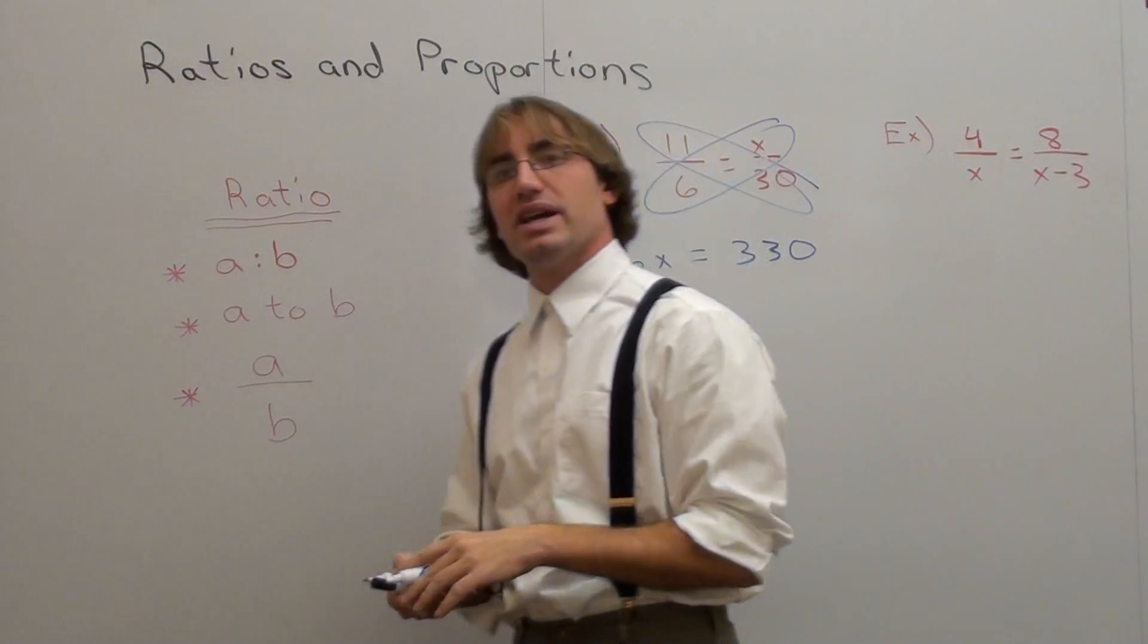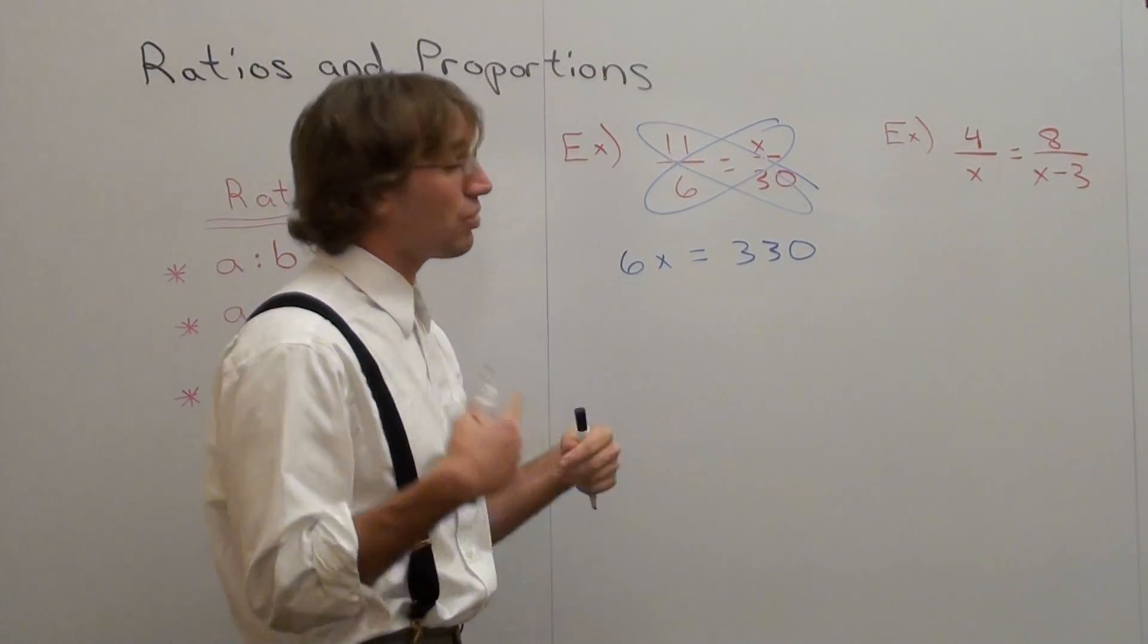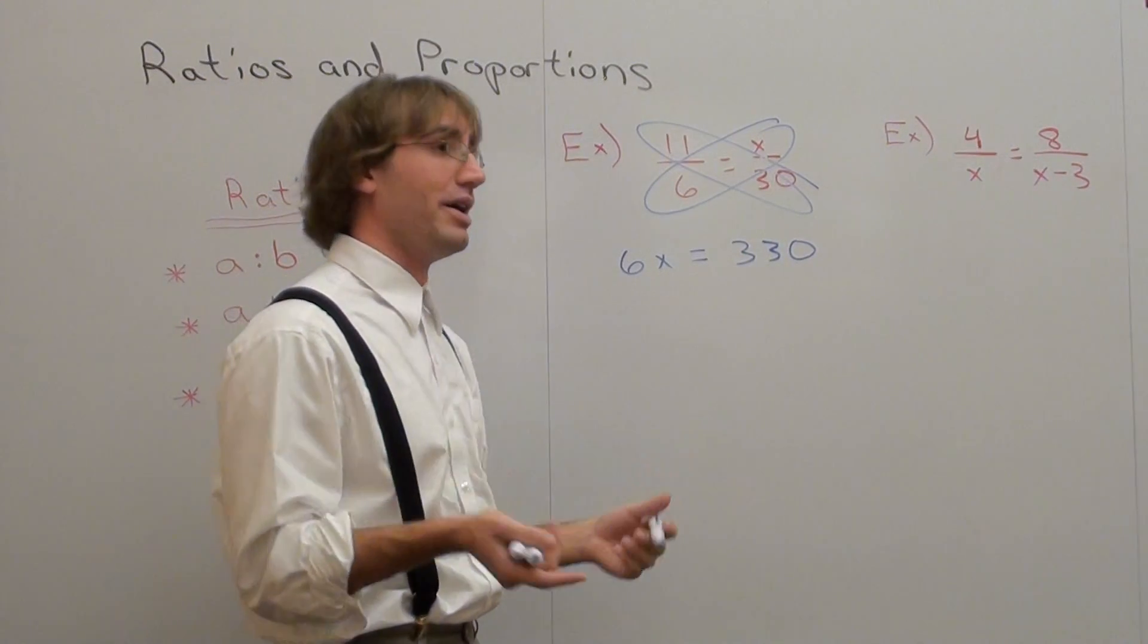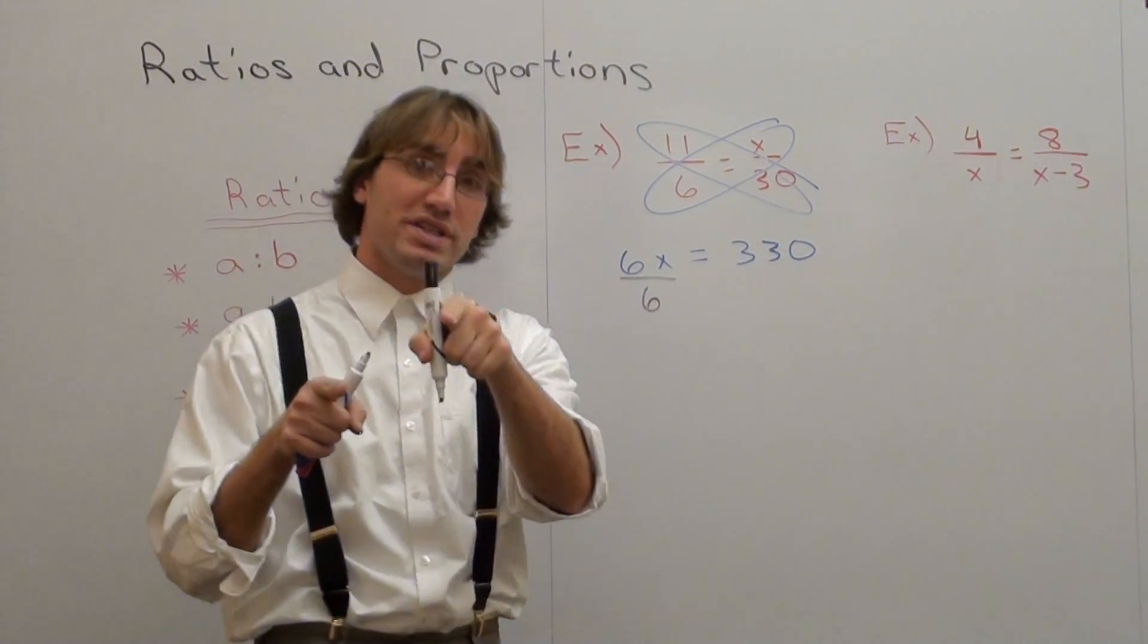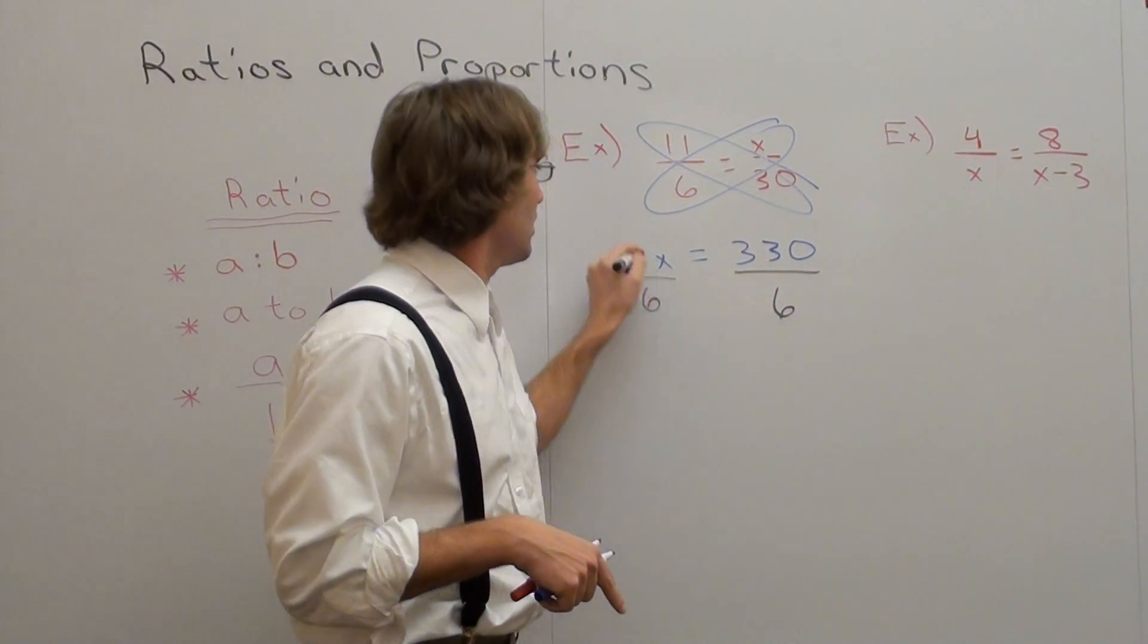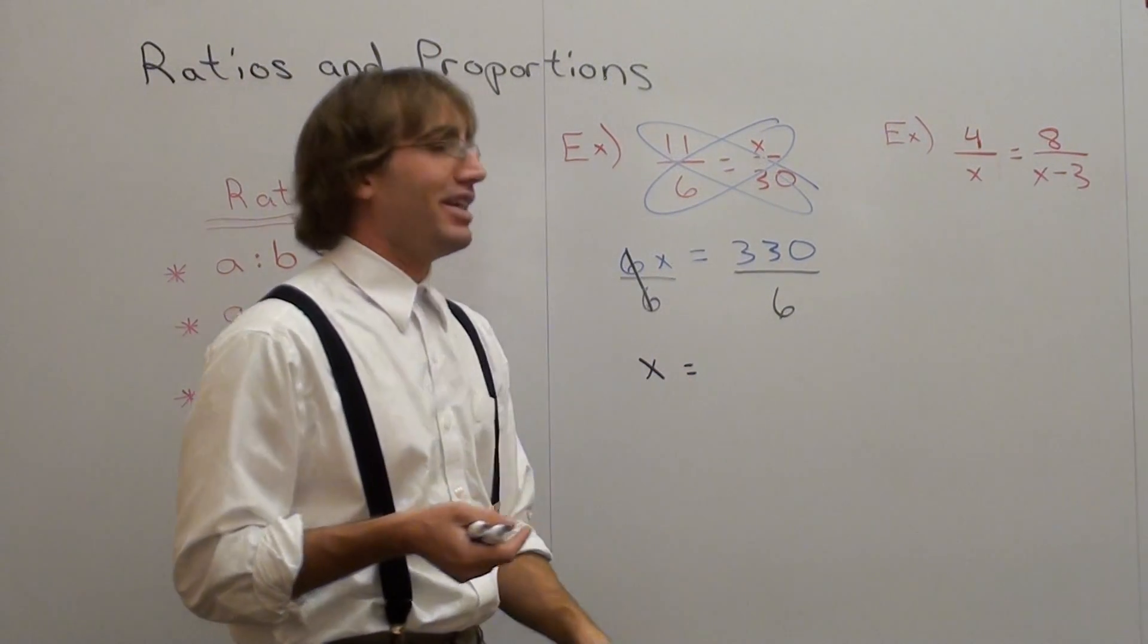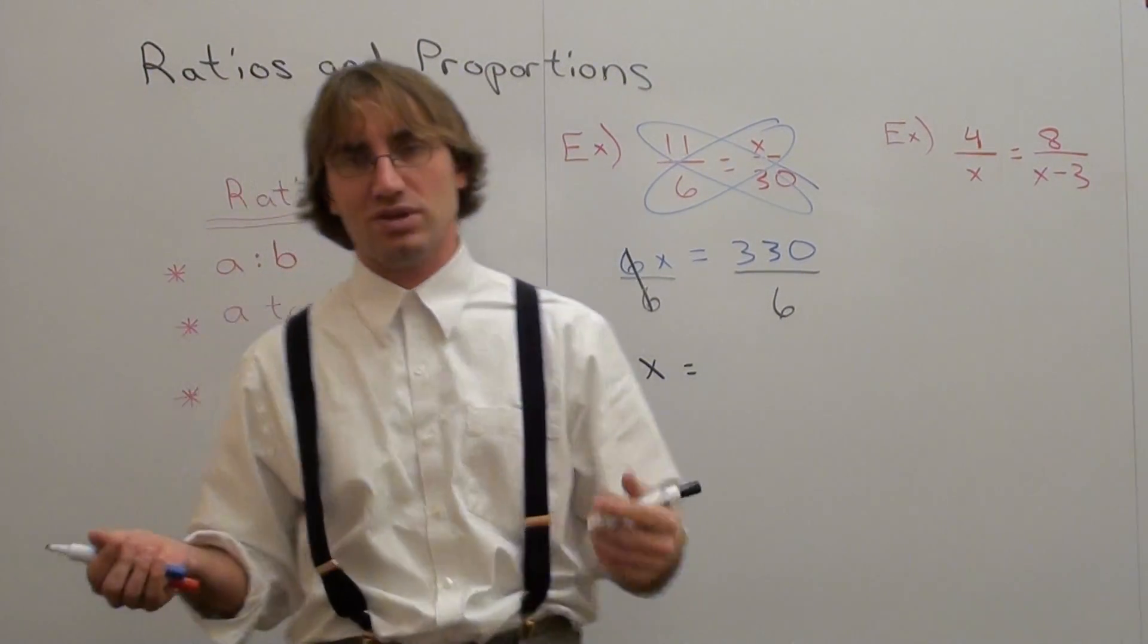I have 6 times x equals 330. I want to divide by 6 on both sides, because it's a multiplication in between, and the only way to get rid of a multiplication is by dividing. But what I do on one side, I do on the other. 6 divided by 6 is 1, or just x, equals. Now, again, I've already figured this out, but I'll go ahead and show you a cute little trick to do this.